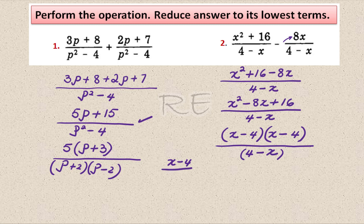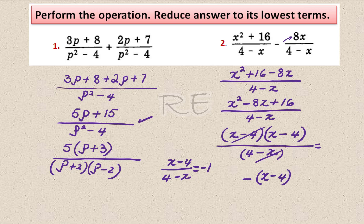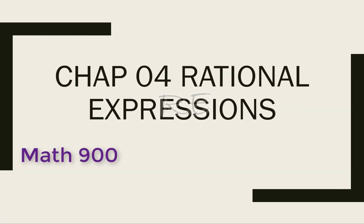Now we must remember that x minus 4 over 4 minus x is equal to negative 1 — a number over its opposite. So when we cross-cancel, we multiply x minus 4 by negative 1. If we distribute, the answer will be 4 minus x.